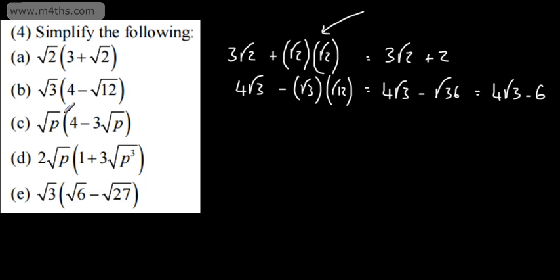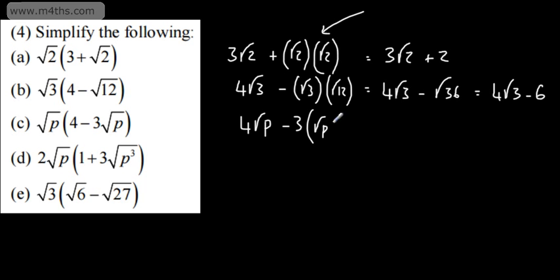Here we've got the root of P multiplied by the quantity 4 minus 3 lots of the root of P. So 4 times root P gives me 4 root P. Then we have root P multiplied by root P multiplied by 3, and we're subtracting that — so it's minus 3 lots of root P times root P. That gives us 4 root P minus 3P, since root P times root P is just P.